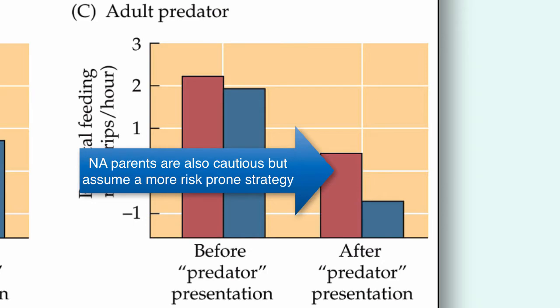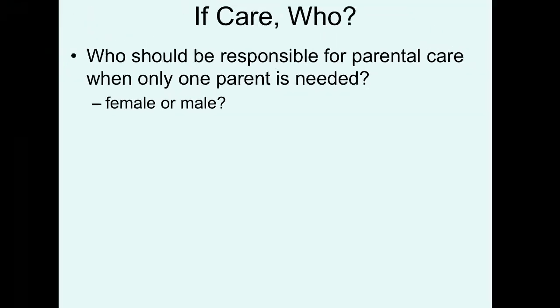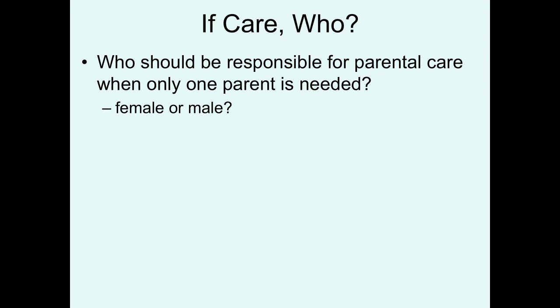North American birds aren't nearly as willing to do this because they're not going to live very long anyway, and if they let this nest fail, there's no guarantee they'll have additional opportunities in the future. So when parental care does occur, who should be responsible when only one parent is needed? We're talking about uniparental care, and when uniparental care exists, should it be the female that provides the care or the male?